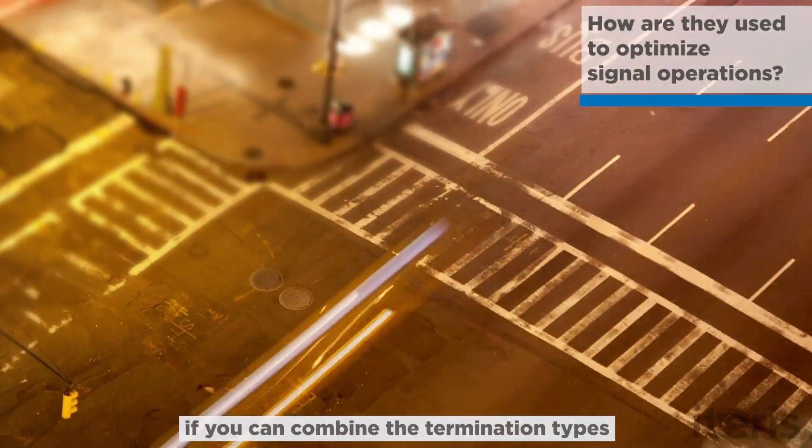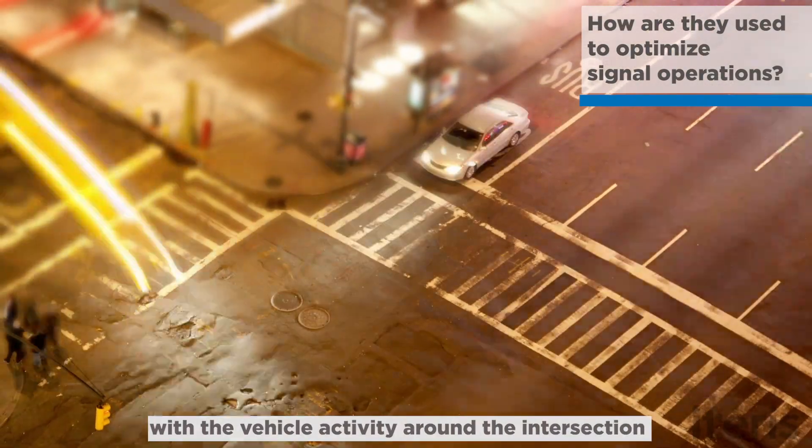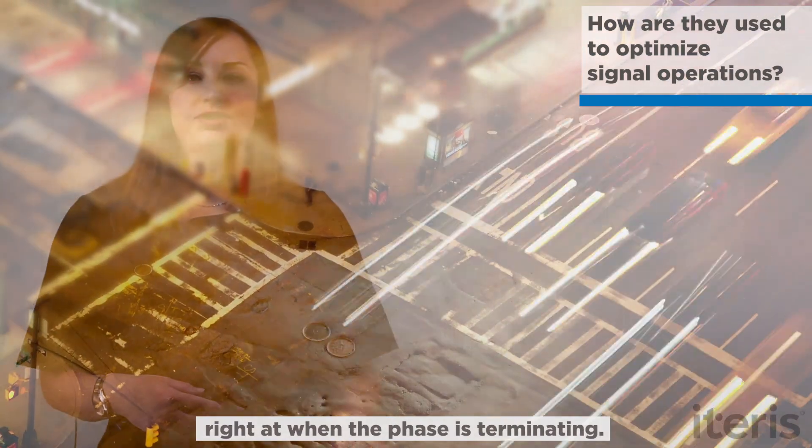And it becomes really interesting if you can combine the termination types with the vehicle activity at the intersection right around when the phase is terminating.